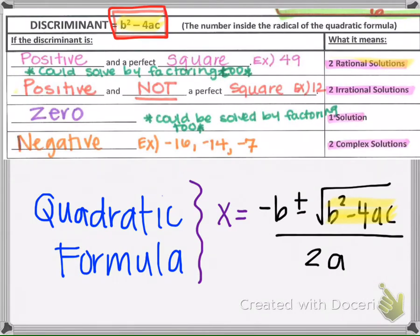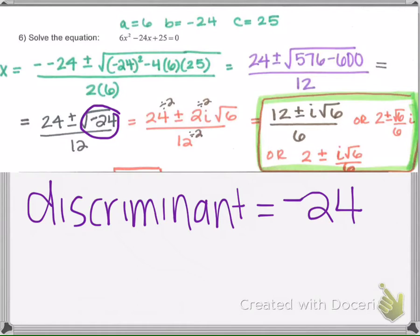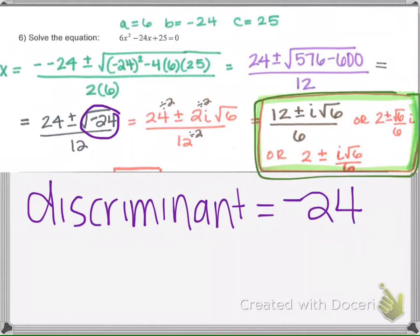Lastly, the discriminant could be negative. If the discriminant is any negative number, that tells you your final answer is going to have i in it — you're going to have two complex solutions. Looking at example 6 that we solved, the discriminant is negative 24. Since the discriminant is negative 24, when you square root it you're going to have an i, so the final answer has i within the answer.